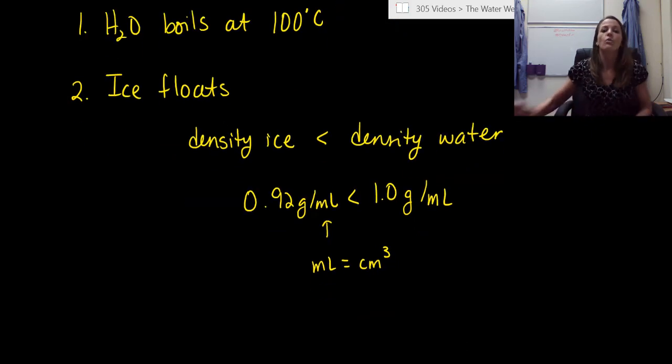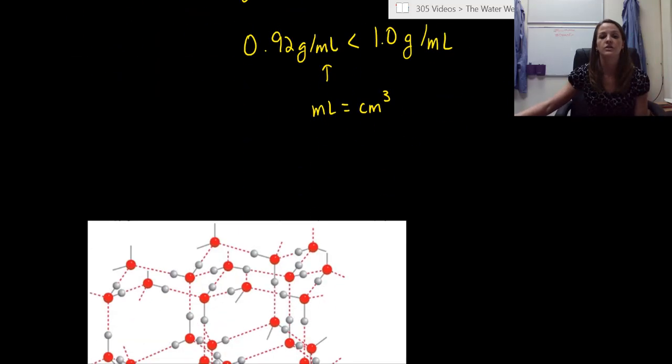All right. So now why is this, though? We can look at this. We could memorize this. But why is this? Why is the density of ice less than that of water? Because that's completely 100% backwards. Most substances, most molecules, the density of the solid state is going to be larger than that of the density of the liquid and then the density of the gas. So let's look at a picture.